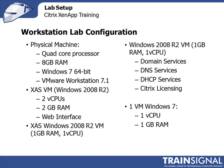Another VM will run Windows Server 2008 R2 with about 1GB of RAM and 1 virtual CPU, running domain services, DNS, and DHCP. We're also going to install Citrix licensing on this VM to consolidate roles and avoid adding another resource-heavy virtual machine just for Citrix licensing.